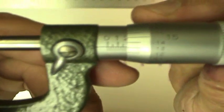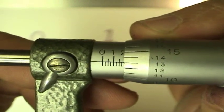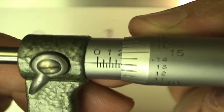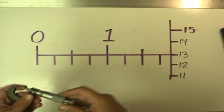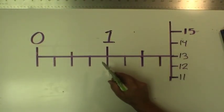Okay, let's try another one. Let's try this one. And now we see that there are three marks showing past the 0.1. Let's do it up here in this scale so we can see it a little bit better.